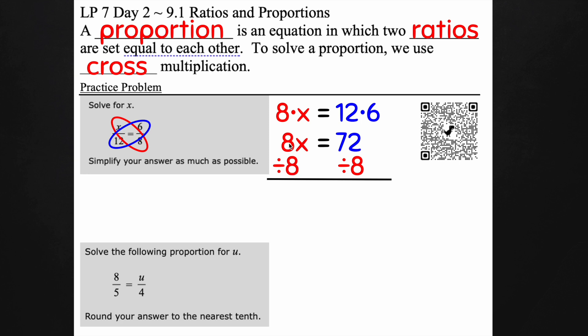The opposite of multiplication is division. So when I divide 8 by 8 I get just x and then 72 divided by 8 is 9.